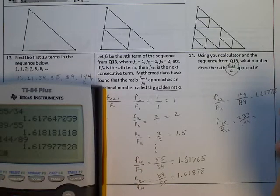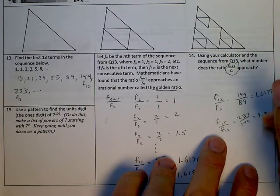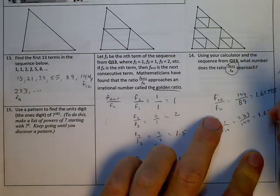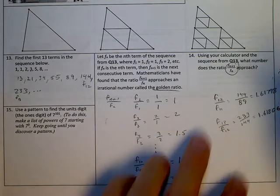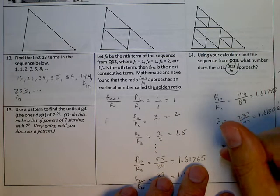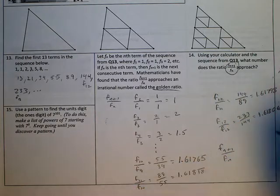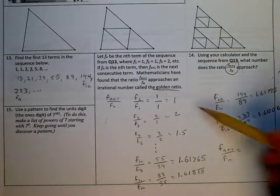Okay, so that's 1, 2, 3, 4, 5, 6, 7. So I need 6 more terms. 8 plus 13 is 21, 13 plus 21 is 34, 21 plus 34 is 55, 34 plus 55 is 89, 55 plus 89 is 130 plus 14, so 144.